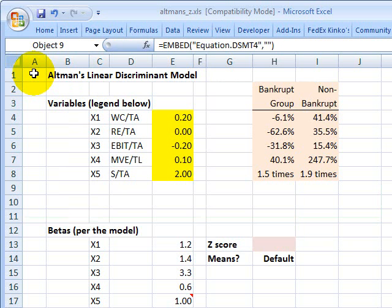Hello, David Harper of Bionic Turtle with a brief review of Altman's Z, which is probably the most famous credit scoring model. It has survived 30 years of application or more than that.